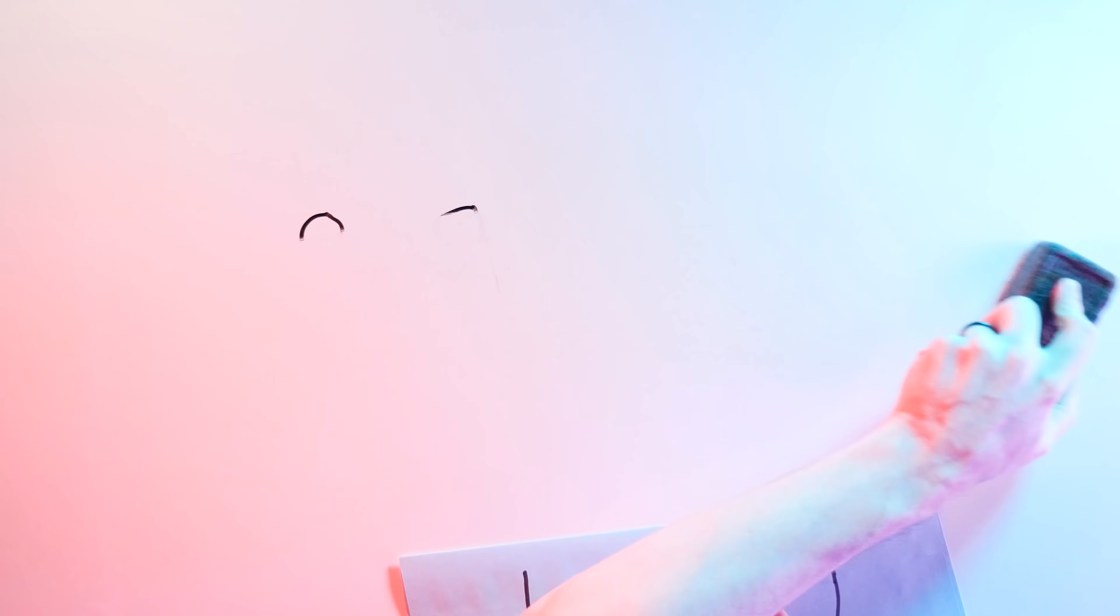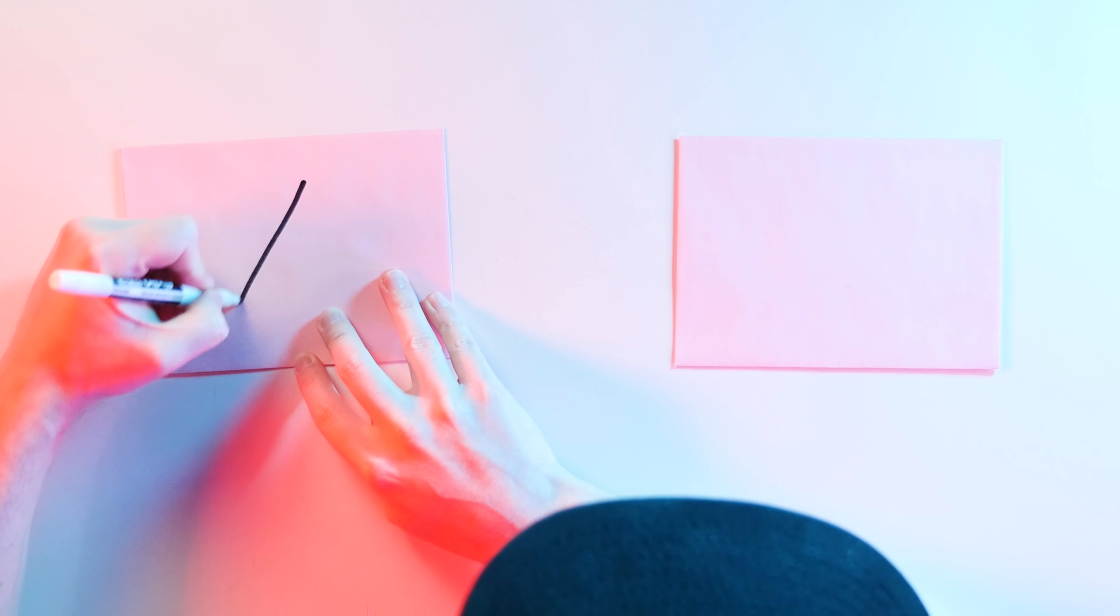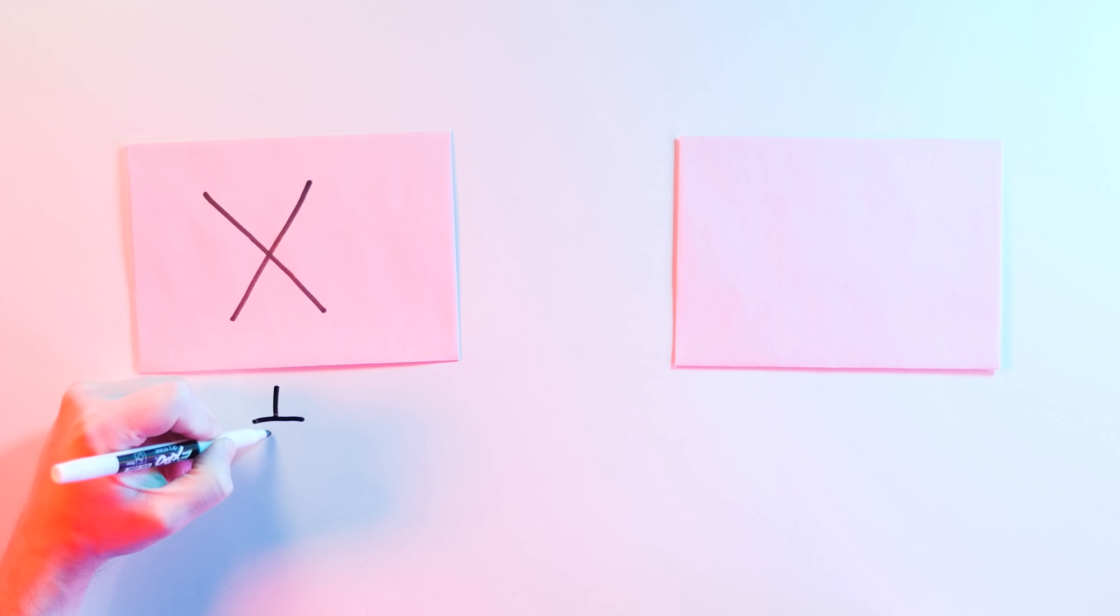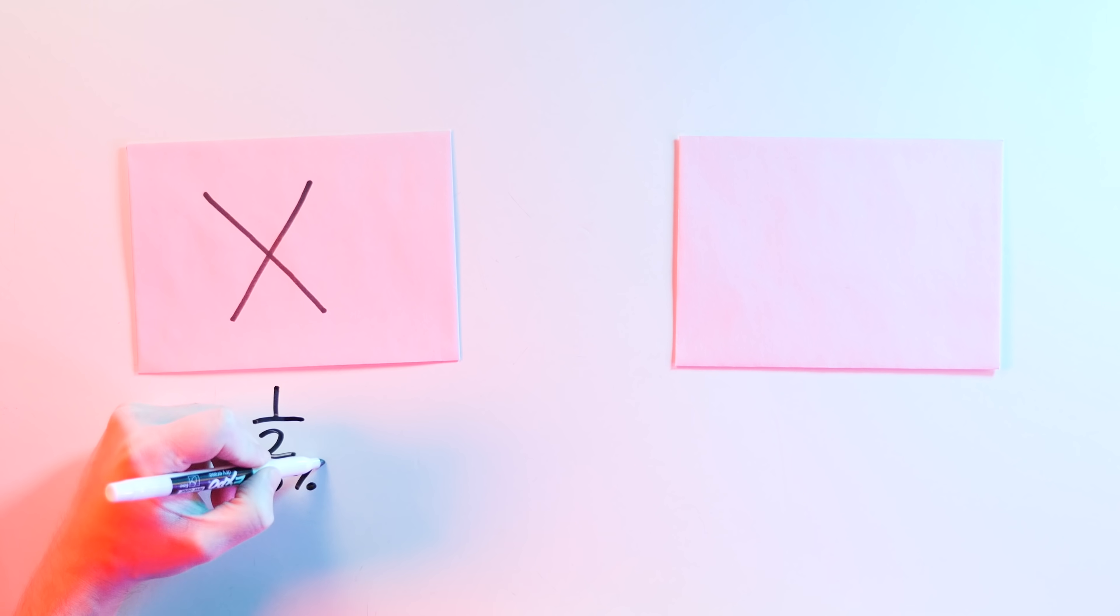So look, the logic for not switching envelopes is pretty straightforward, given that you don't know anything about either one or even what the higher and lower values are inside them. One is just as good as the other. But the math in favor of switching is kind of compelling. Let's say that the envelope you choose contains X dollars. We don't know how much X is, just that there's something in the envelope we can call X.